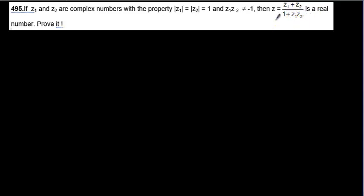We need to show that z is a real number. From previous questions, if a complex number — a sum or division — is equal to a real number, it means the number should equal its own conjugate. We also need to remember the property: z times z-conjugate equals the modulus of z squared.